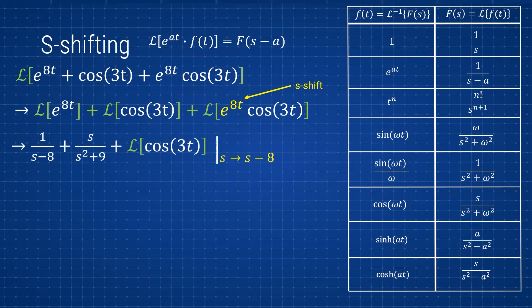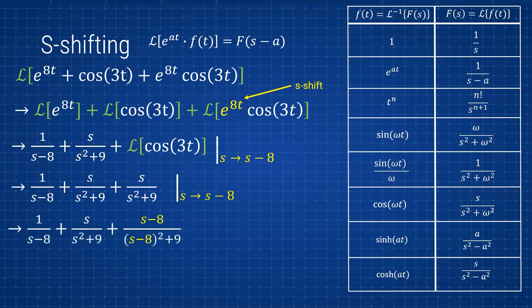For the third term, I rewrote everything in yellow to show that I still need to take the Laplace of cosine(3t) as normal, but any s's present in the resulting Laplace transform will be rewritten as s minus 8 — that's the shift. The shift comes from the e^(at): whatever value of a we have, that's how much s is shifted — s minus something, or s plus something if a is negative. So we take the Laplace of cosine(3t), which is s/(s²+9), and substitute every s with (s−8).